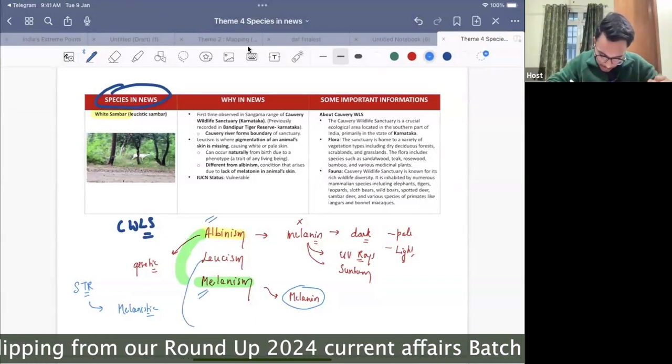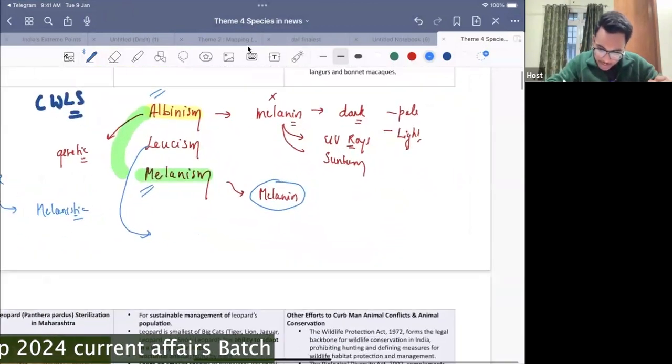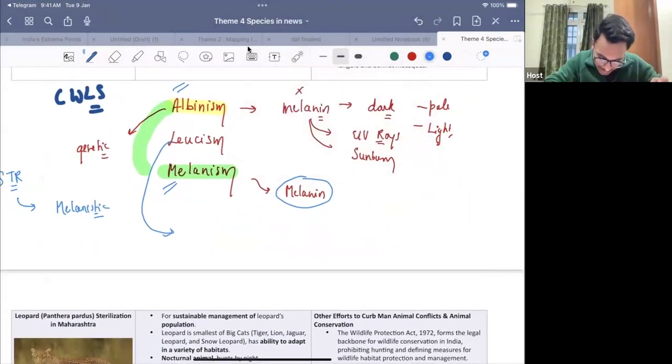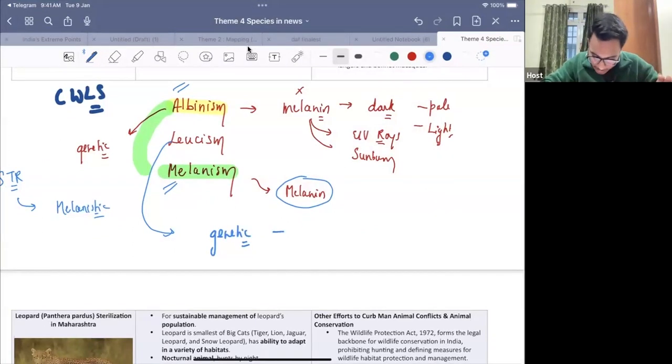Then we have leucism. Then after that, we have leucism. Now guys, when we talk about leucism, what is leucism? So, leucism is again a genetic condition. Leucism again, it is a genetic condition. And there will be the partial loss. There will be the partial loss of the pigmentation in the animals.